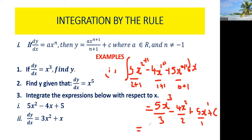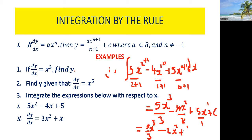So finally, we are going to have 5 over 3 times x cubed, minus — since 4 over 2 simplifies to 2 — we have 2x squared, plus 5x, plus c. And we have found the function.